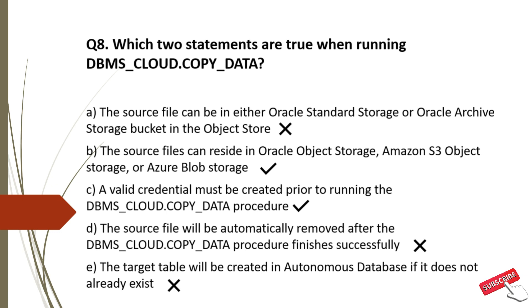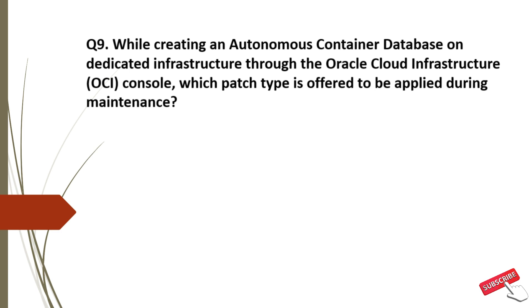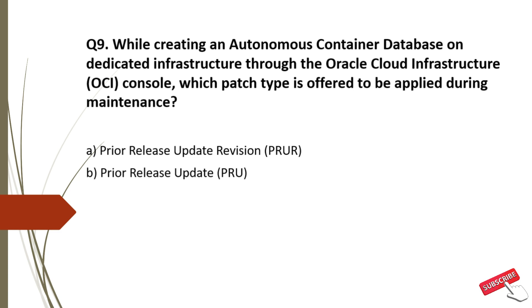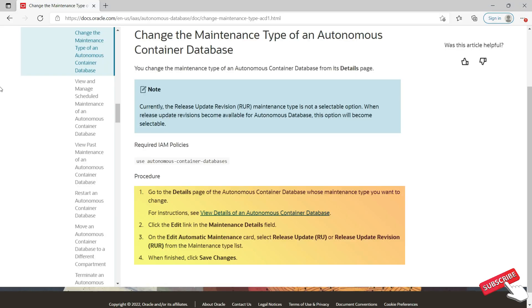Question 9: While creating an Autonomous Container Database on dedicated infrastructure through the Oracle Cloud Infrastructure Console, which patch type is offered to be applied during maintenance? Options: A. Prior Release Update Revision, B. Prior Release Update, C. Release Update, D. Quarterly Bundle Patch. You change the maintenance type from the Autonomous Container Database details page: click the edit link in the maintenance details, then on the Edit Automatic Maintenance card, select Release Update or Release Update Revision from the maintenance type list, then click Save Changes.